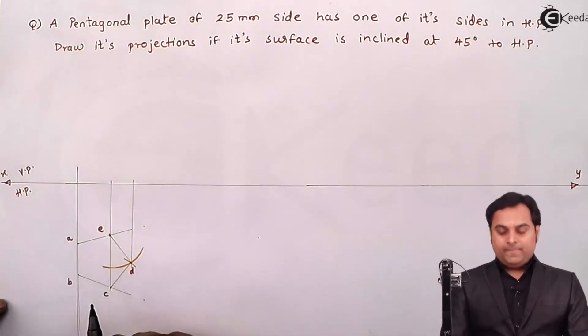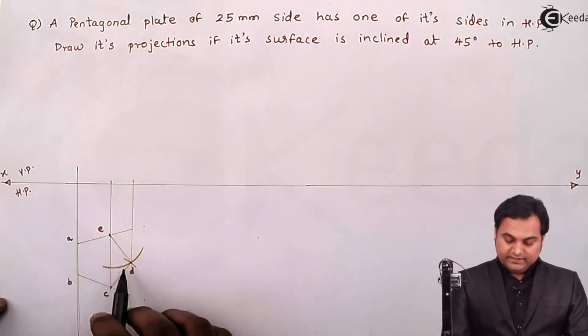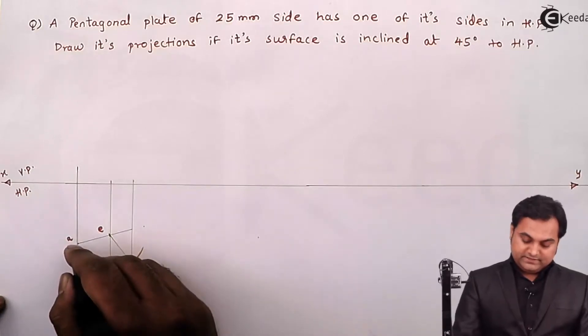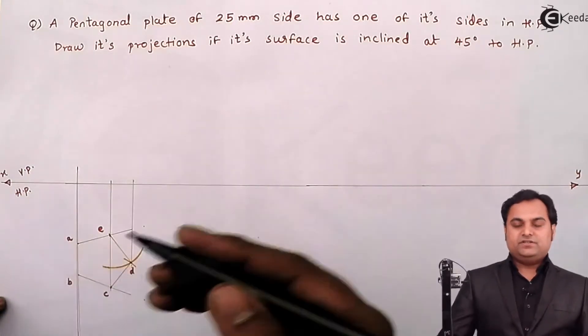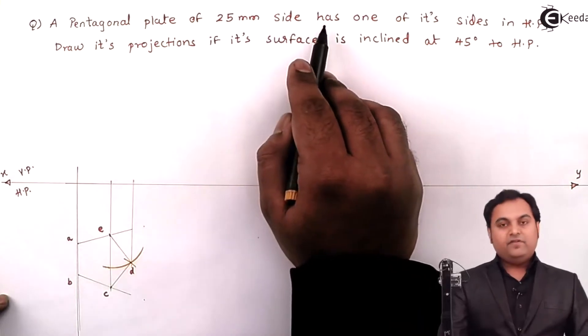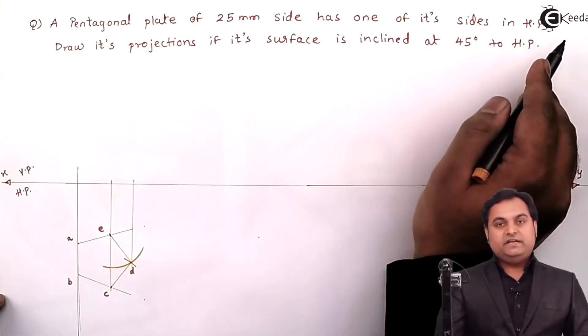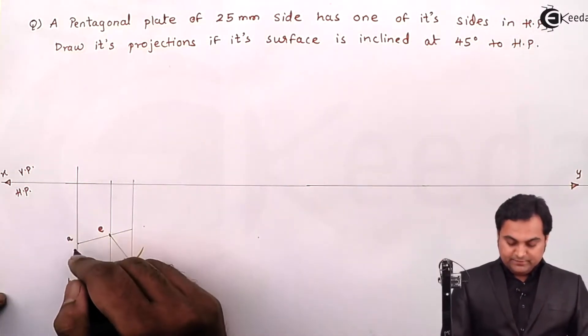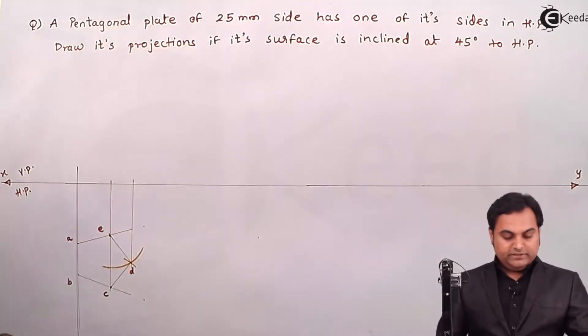So here the pentagonal plate is looking like a pentagon in the top view and this is the side AB on which it is resting as given in the question. Pentagonal plate of 25mm side has one of its side in HP, that side is AB. So this is the pentagonal plate, I'll make it dark.